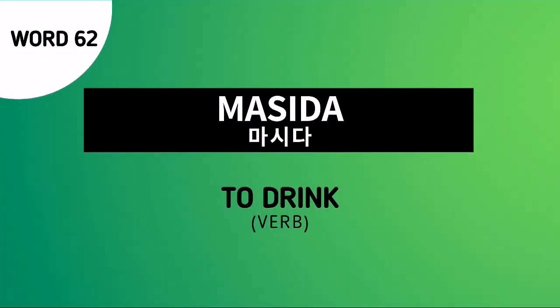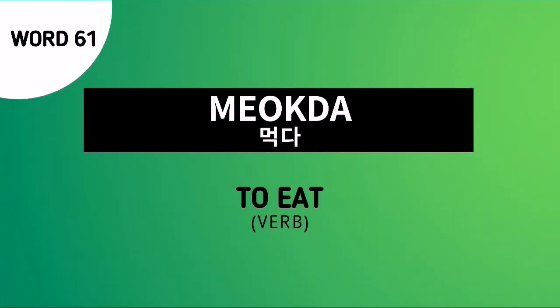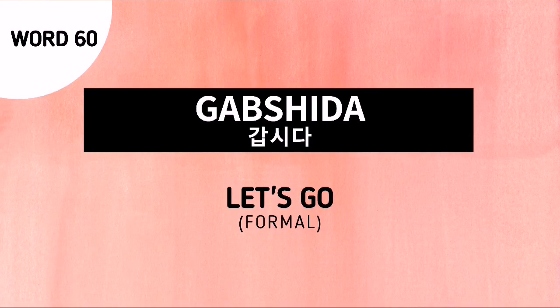Word number 62 is masida. This is a root verb which means to drink. Word number 61 is meokda. This is a root verb which means to eat. Word number 60 is gabsida. This is a formal way of saying let's go.